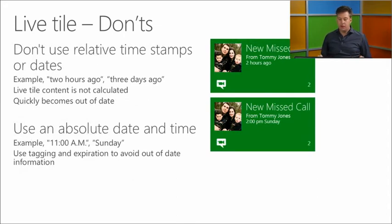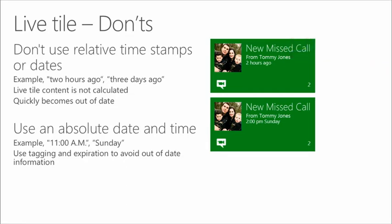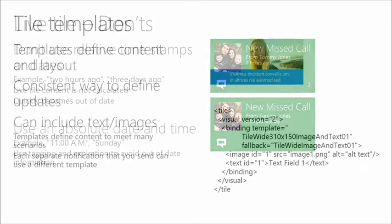Another thing to avoid: don't use relative timestamps. For example, saying 'missed call two hours ago' is problematic because you don't have real control over when the tile is updated — the data can go stale, and what says 'two hours ago' might actually be longer. Use absolute date and time so the user can make the calculation themselves, and the information is still valuable.